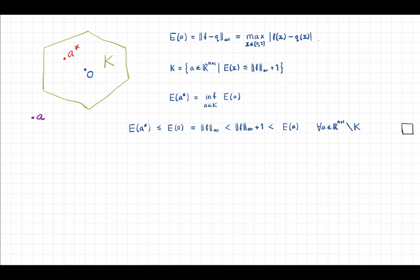Okay, that can be proved easily. So let's say this is our set K and we have a minimizer a star inside this set K. Now let's take out some arbitrary point a outside, and we want to prove that E evaluated at a star is smaller than E evaluated at arbitrary point a outside the set K.